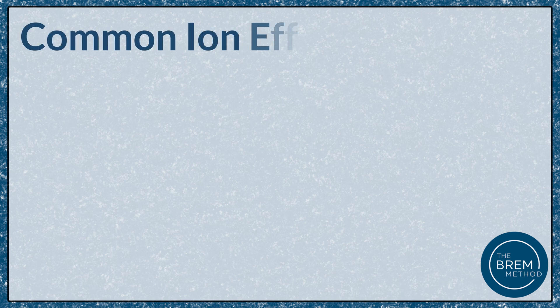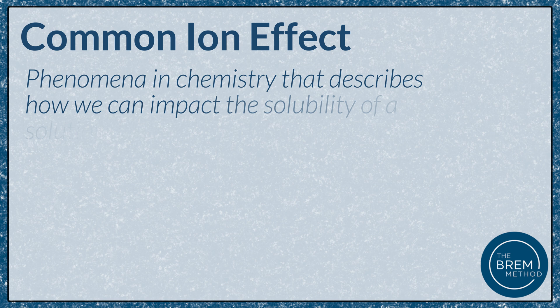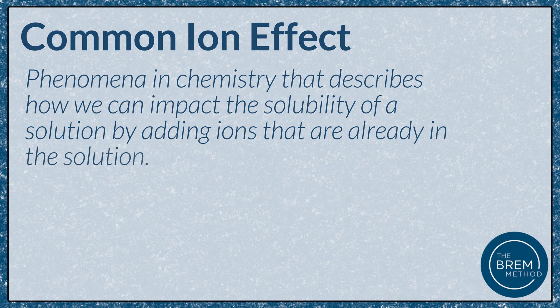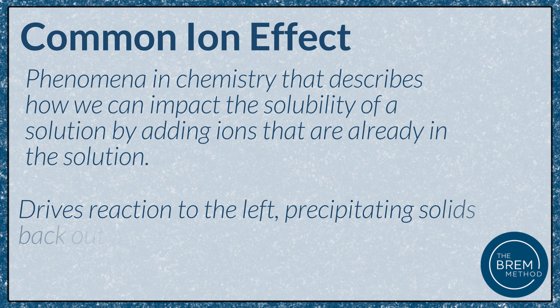As always, let's do some definitions first. The common ion effect is a phenomenon in chemistry that describes how we can impact the solubility of a solution by adding ions that are already in the solution. That drives us back to the left, or precipitating our solids back out of solution. Now while we're usually using the common ion effect to decrease solubility, we'll talk about how we can use these principles to increase solubility and how pH can play into this phenomenon.